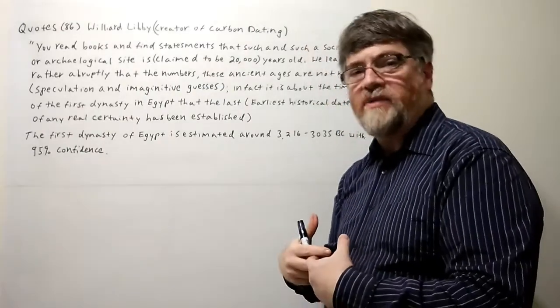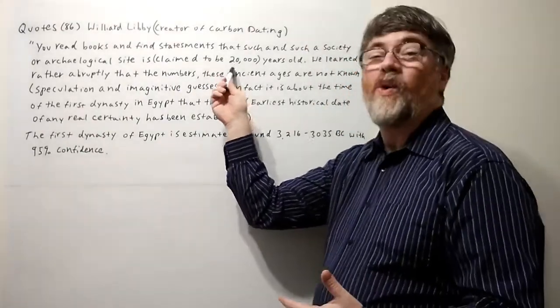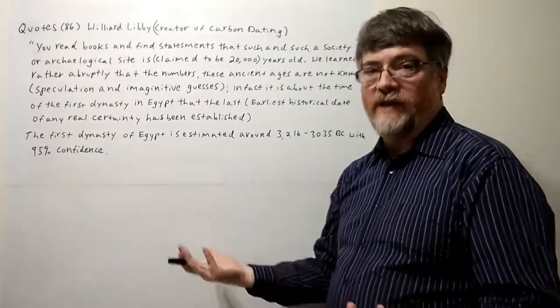So this is the guy who created carbon dating, saying that people using numbers of even only 20,000 years are mostly guessing. It's mostly speculation.